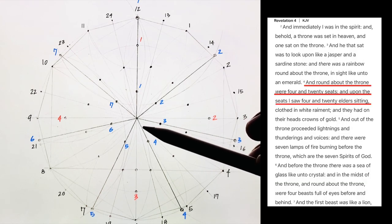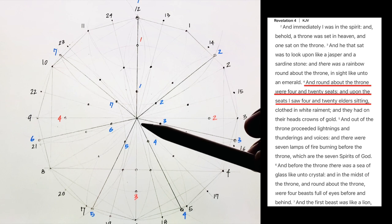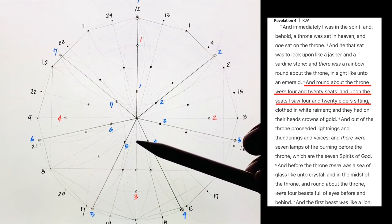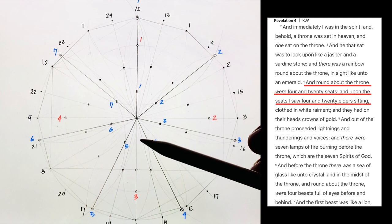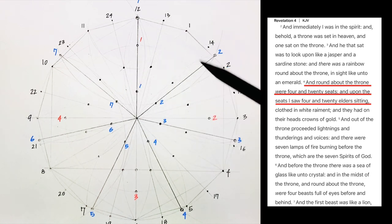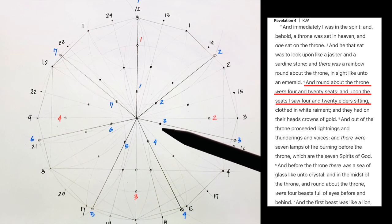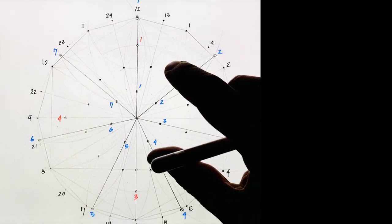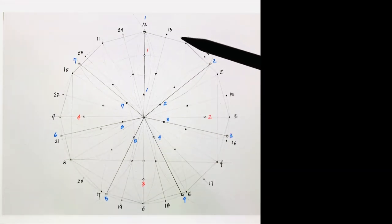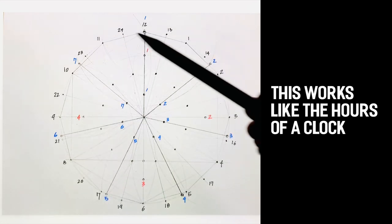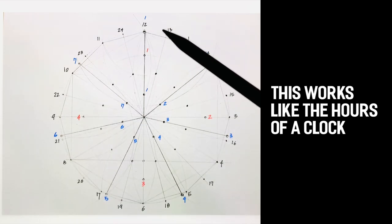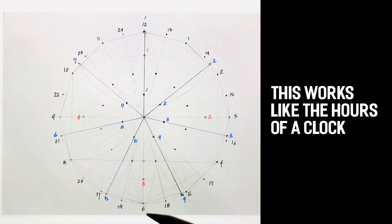Now we go to Revelation 4:4. And round about the throne were four and twenty seats. And upon the seats, I saw four and twenty elders sitting, clothed in white raiment. Now we are looking at the 24 elders sitting around. We have to count it just like you would in a clock, with the 12 up here, 3, 6, and 9.